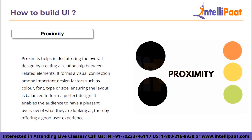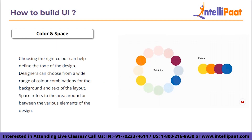Next we have proximity. Proximity helps in decluttering the overall design by creating a relationship between related elements. It enables the audience to have a pleasant overview of what they are looking at, offering a good user experience. It forms a visual connection among important design factors such as color, font, type, or size, ensuring the layout is balanced. Then we have color and space. Color plays a very important role — choosing the right color can help define the tone of the design. Space refers to the area around or between the various elements of the design to make sure things are not looking too cluttered.